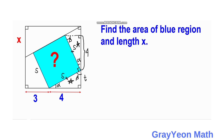Next, we focus on this smaller right triangle. This angle is 90 degrees, this should be alpha, and this should be beta. This is actually a right triangle which is similar to the two first right triangles that we identified.